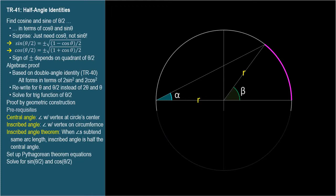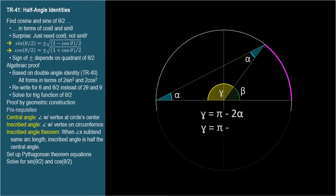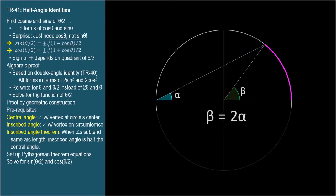By the base angle theorem, the two opposite angles of the isosceles triangle must be congruent — we'll call them alpha. Since the interior angles of a triangle sum to π radians, the yellow angle gamma must be π minus 2 alpha. Since gamma is supplementary to the central angle beta, gamma also equals π minus beta. Setting these equal gives 2 alpha equals beta — so the inscribed angle is half the central angle.